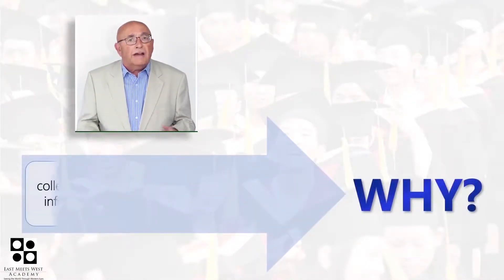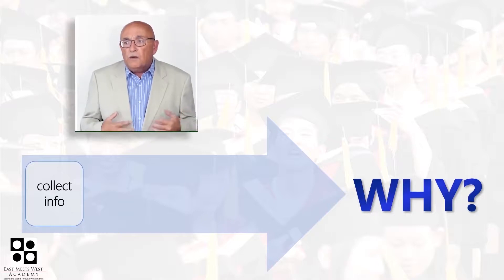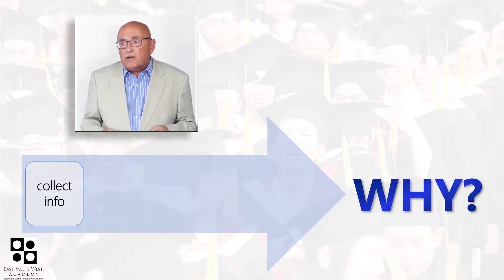The first step is to collect information. Here we learn where to collect information, what type of information you're looking for, where you might find good information, and where you might find bad information. We also learn the concept of relevance — something I've been unable to translate properly into Chinese. The closest I've come is 跟题目有相关的, meaning 'has a relationship with the subject.' Relevance is perhaps the most important concept in Western communication.